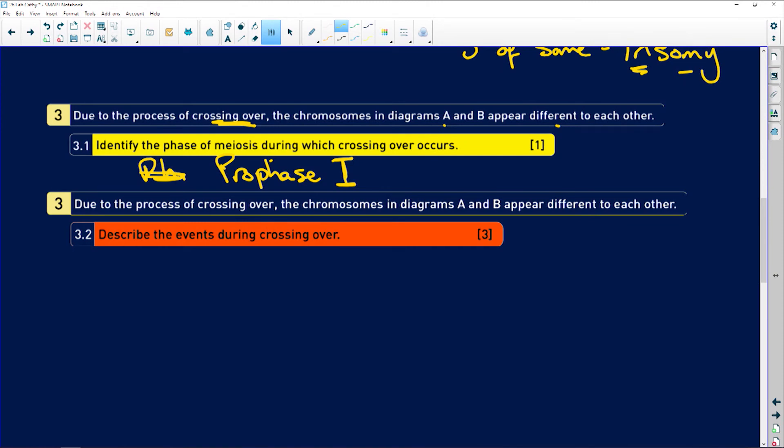Describe the events during crossing over. We have the chromatids of homologous chromosomes lying next to each other or adjacent to each other. Adjacent means next to. So next to each other, cross over or overlap and touch. Where they touch, it's called the chiasma. That's the point where they touch. And what happens then? The DNA is swapped from one chromatid to the other chromatid. So that segments, entire segments are swapped. And then they go back to being where they are. So what have they done? We now have genetic variation occurring.